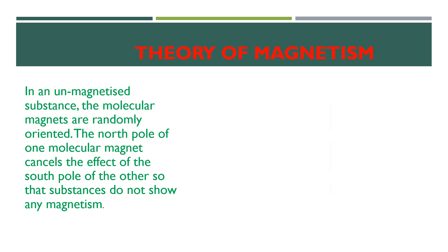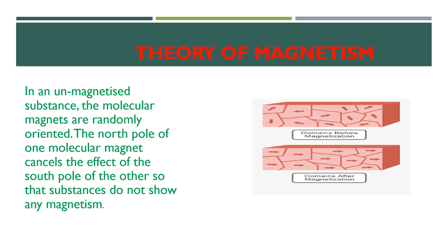In an unmagnetized substance, the molecular magnets are randomly oriented. The north pole of one molecular magnet cancels the effect of the south pole of the other so that the substances do not show any net magnetism.